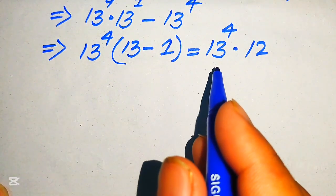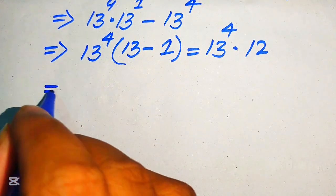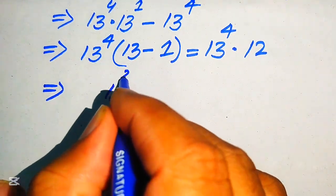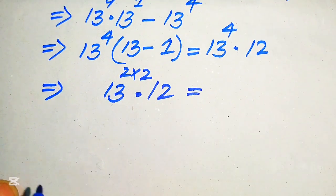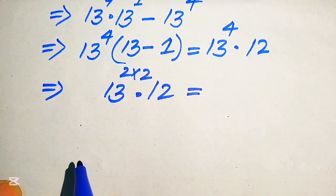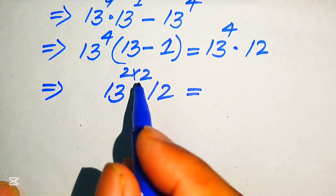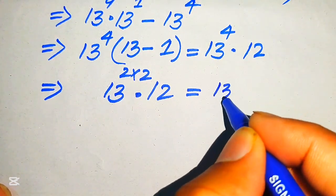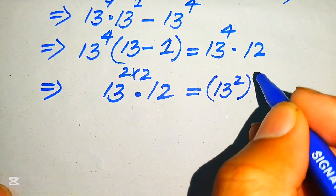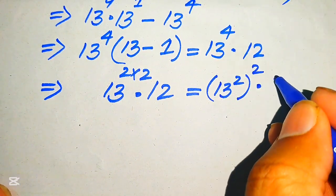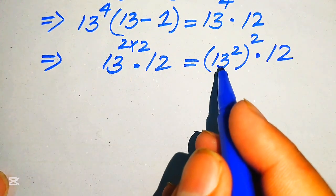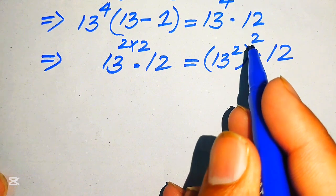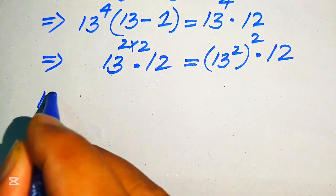13 to the power of 4 means we break its exponent and write it as 13 to the power of 2 multiplied by 2, all multiplied by 12. Applying the exponent law, we move the two inside and obtain 13 squared, whole squared, multiplied by 12. To find this, we first need to find the square of 13.